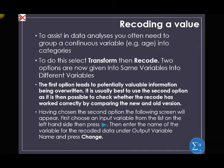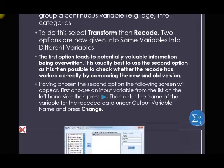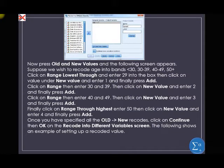Having chosen the second option, the following screen will appear. Choose an input variable from the list on the left-hand side, then enter the name of the variable for the recoded data under Output Variable — name it 'age_group' — and press Change. Then press Old and New Values. Suppose we wish to recode age into these bands: less than 30, 30 to 39, 40 to 49, then 50 plus.